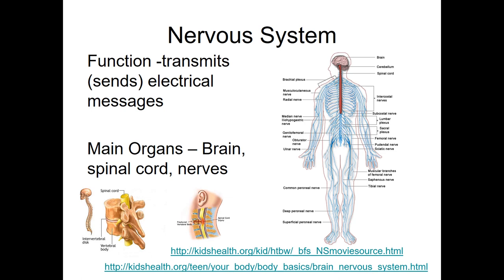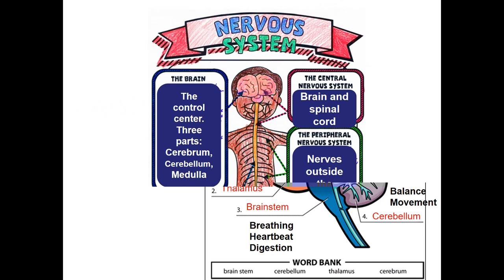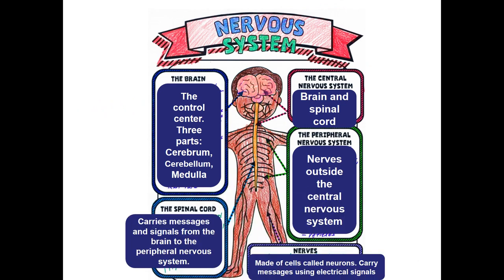The nervous system is responsible for transmitting messages — specifically electrical messages from your brain to different parts of your body and back. The brain is the control center, and the spinal cord is like Main Street where all messages travel through. Together they make up the central nervous system. The peripheral nervous system is everything else — all the nerves outside the brain and spinal cord. The word 'peripheral' means 'on the side.' All of these parts are made of nerves, and the cells are called neurons.